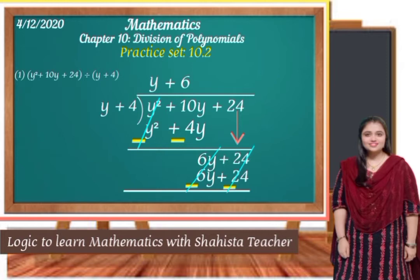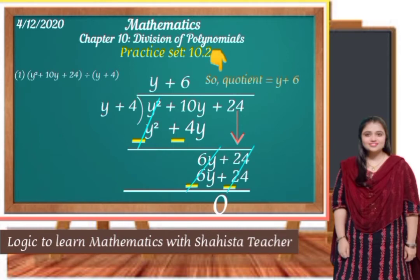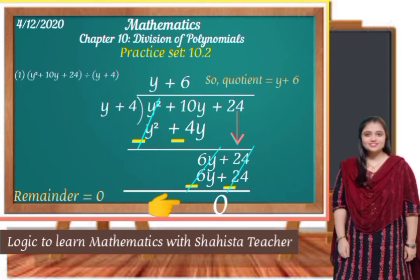So the final answer: remainder is 0. So the quotient is y + 6 and the remainder is 0. After dividing y² + 10y + 24 by y + 4, the quotient is y + 6 and the remainder is 0. In this way we have completed question number 1 of practice set 10.2.